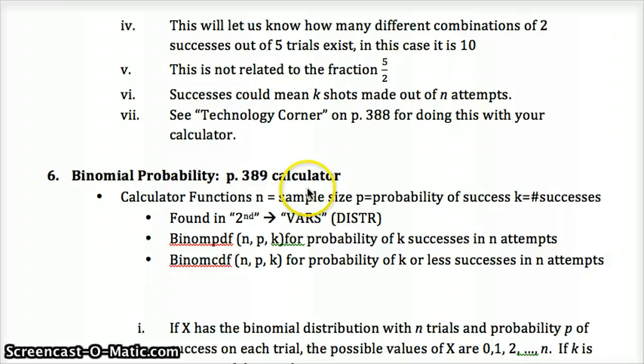Check over page 388 and your calculator functions to see about how to do that on the calculator. Also, take a look at page 389 for the calculator function on binomial PDF and binomial CDF. Binomial PDF lets us know the probability of K successes in N attempts. So that's if we want to know an exact number, like two successes out of five. So if we had five shots and you're a 70% shooter and we wanted to know the probability of getting two out of five, we'd put in five for N, 0.7 if you're a 70% shooter, and then two for binomial PDF, and it'll give us the probability.